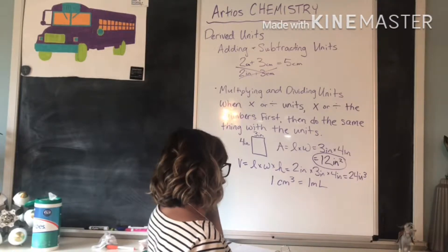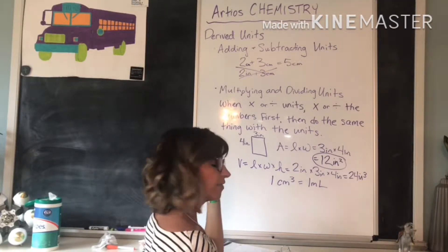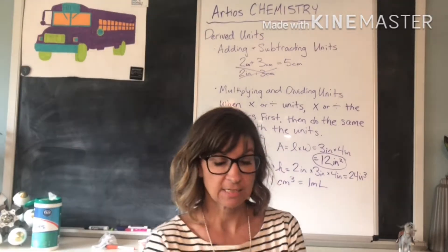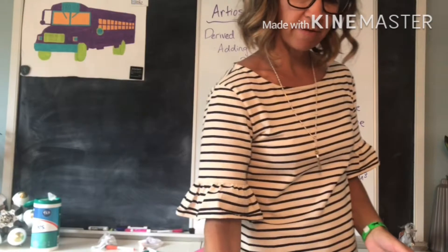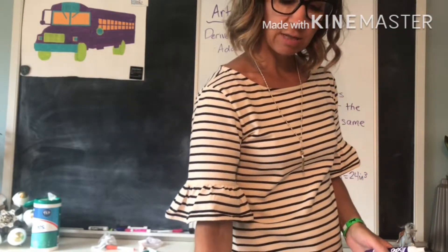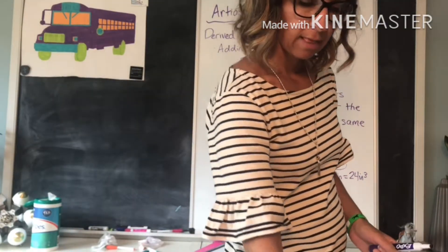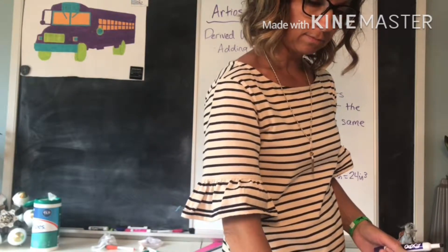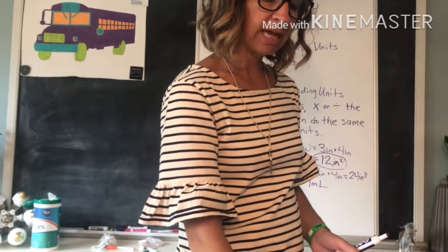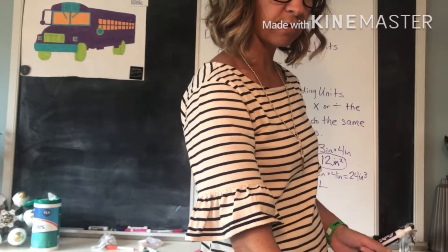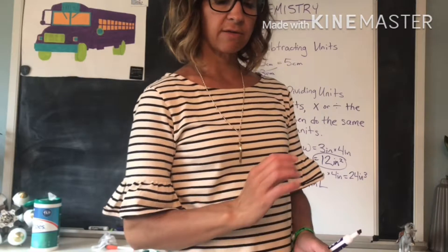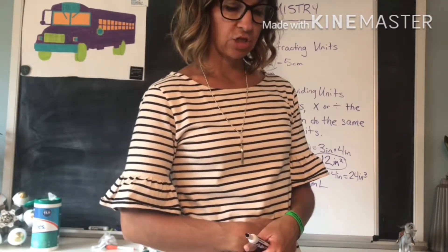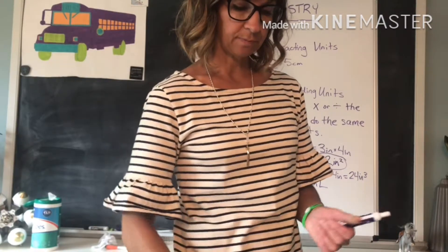Let's take a look at example 1.4. I don't think I'm going to put it on the board. You can include it in your notes if you feel like it's necessary. But example 1.4 shows you how they multiplied the units. The length, the width, and the height, it gives you the numbers there. They multiplied the numbers out, then they multiplied the units out. And so the units ended up being in inches cubed.